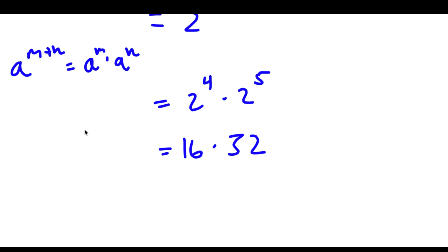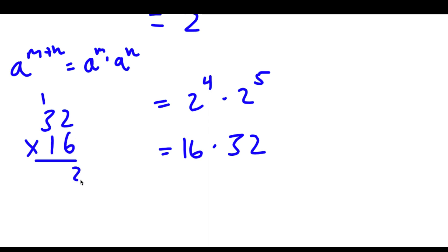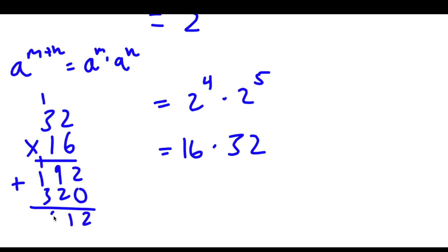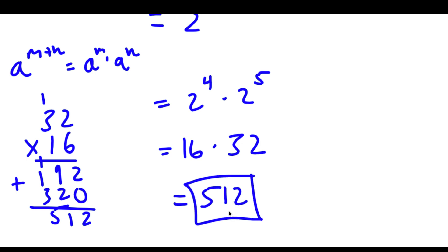So I have 16 times 32. 32 times 16: 2 times 6 is 12, 6 times 3 is 18, 18 plus 1 is 19, 1 times 2 is 2 and 1 times 3 is 3. So if I add these together, I get 512. So this means 512 is our answer.